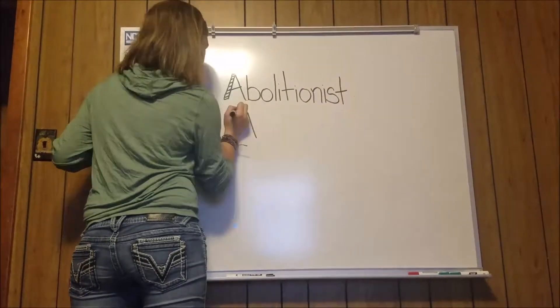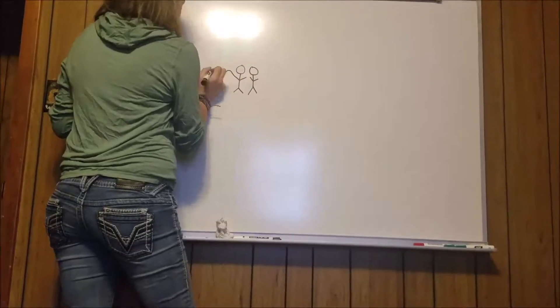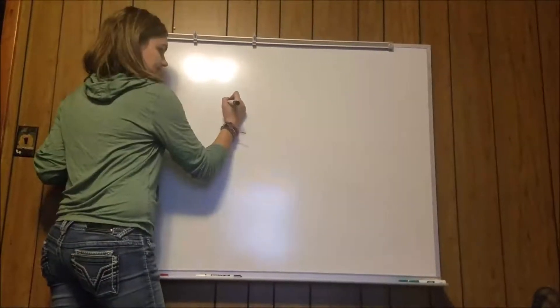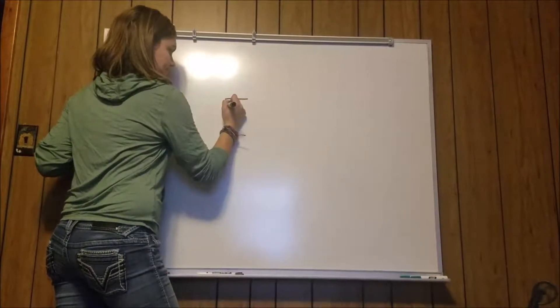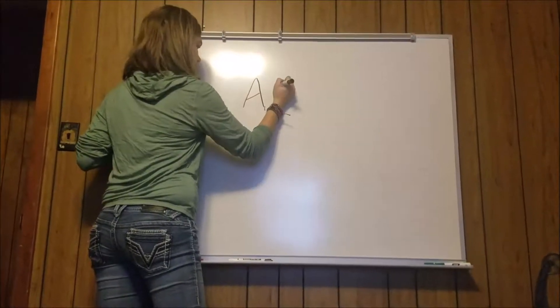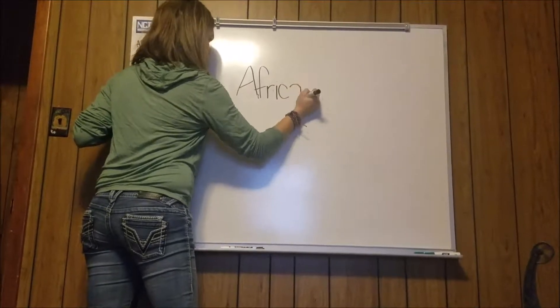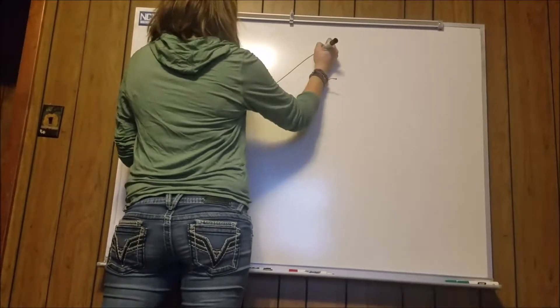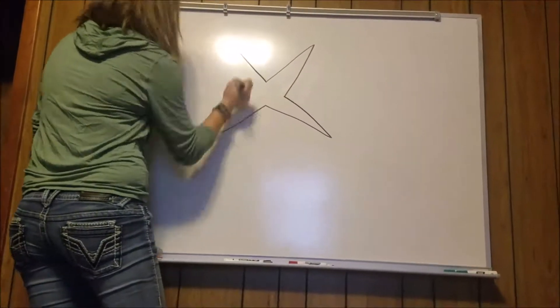Next, we have the abolitionist movement. The abolitionists believed that we should end slavery, although they didn't all believe that blacks and whites were equal. Some actually believed that we should send them to Africa to avoid enslaving them. The starters of this movement were the Quakers.